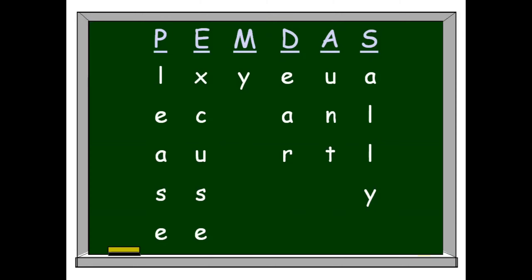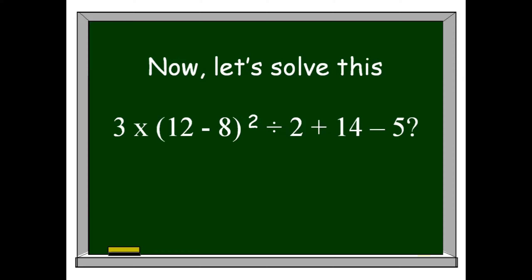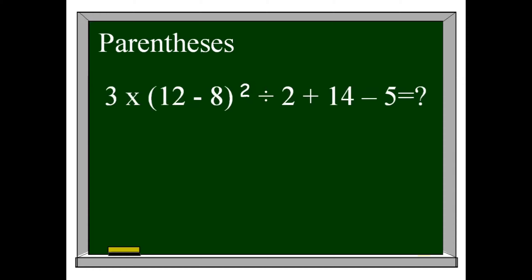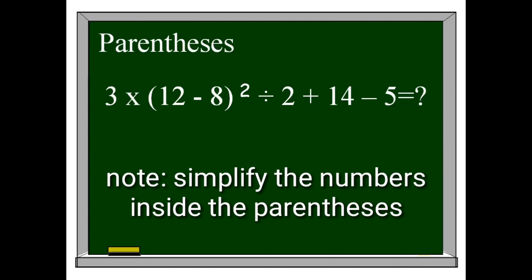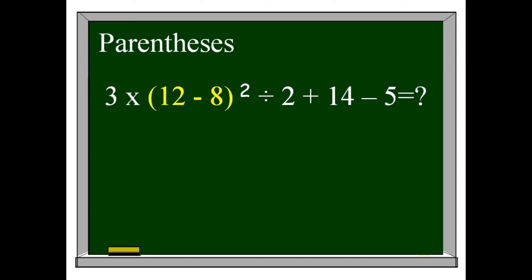Now let's solve the expression: 3 times the quantity of 12 minus 8, squared, divided by 2, plus 14 minus 5. The first step of the order of operations is Parenthesis — we're going to simplify the numbers inside the parenthesis first. We have 12 minus 8, so we solve that: 12 minus 8 equals 4. Don't forget to write the remaining components of your expression.